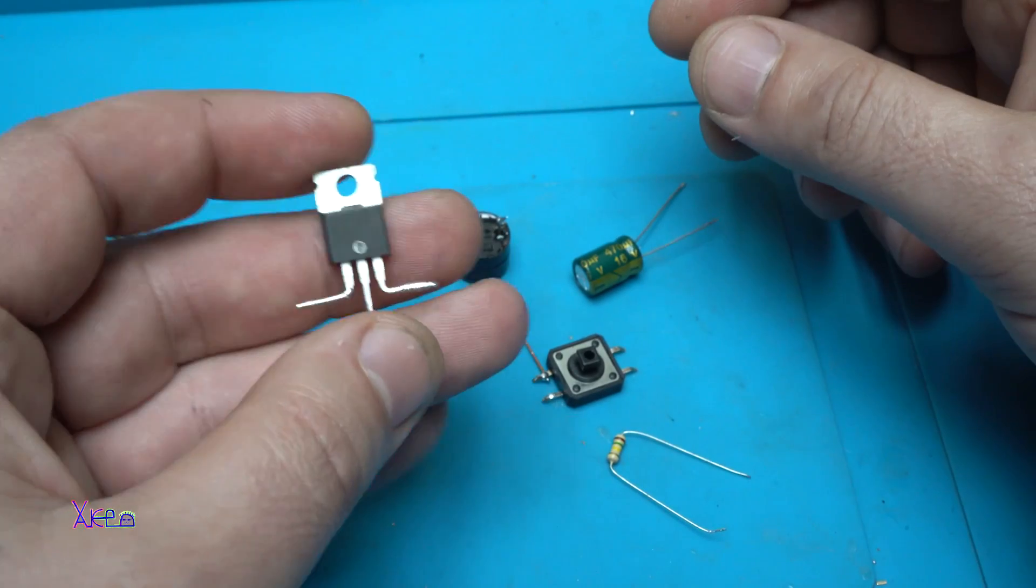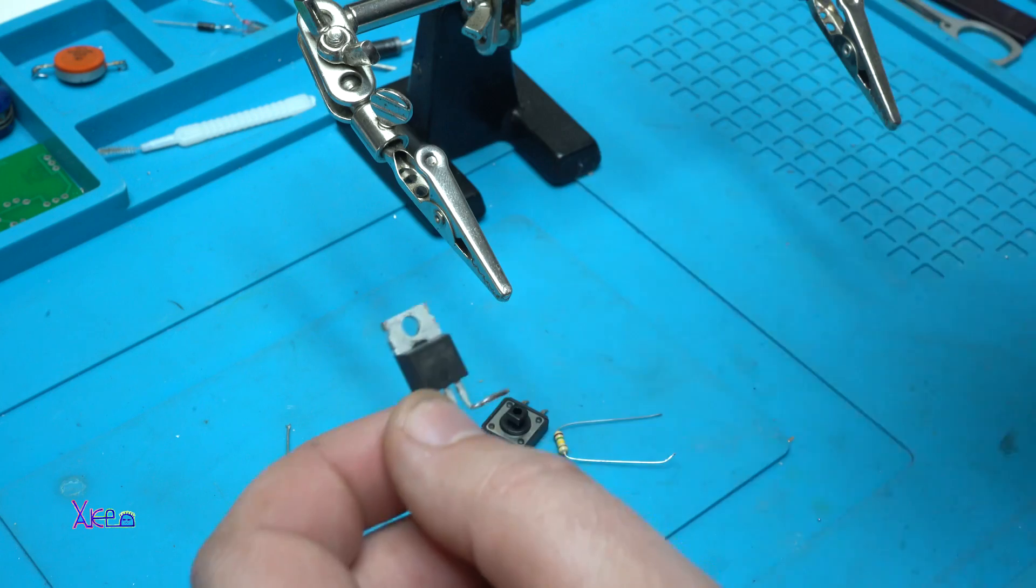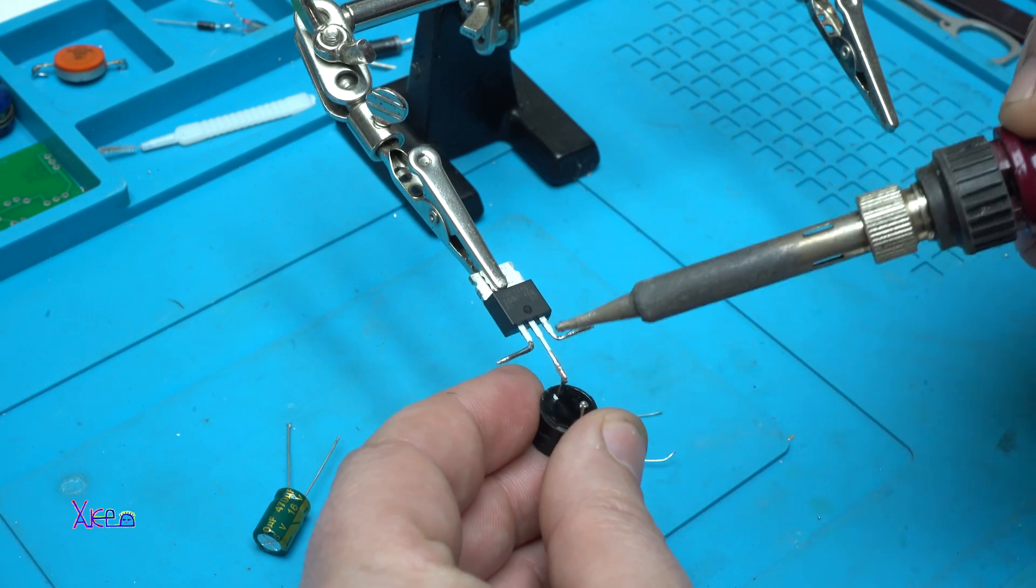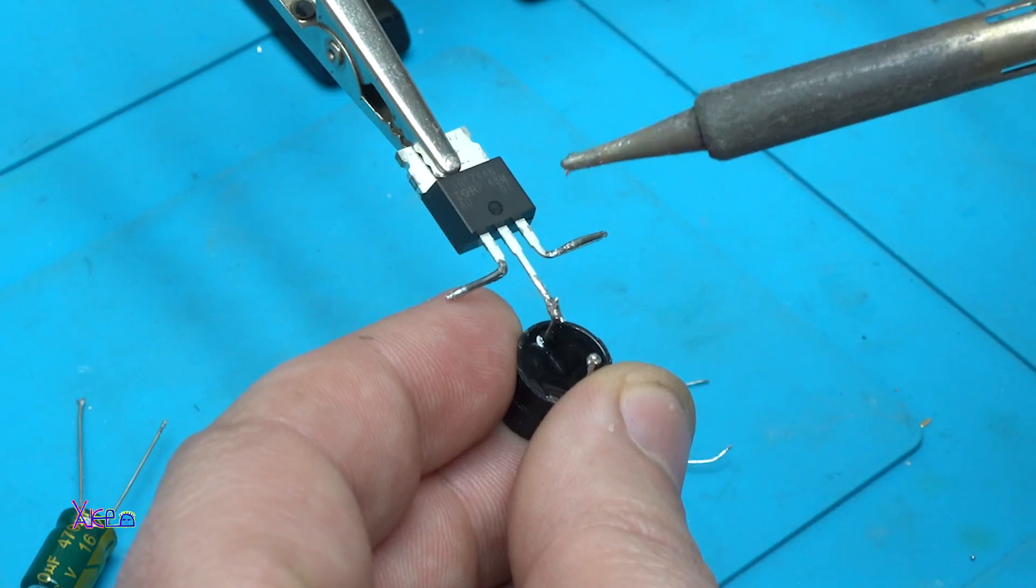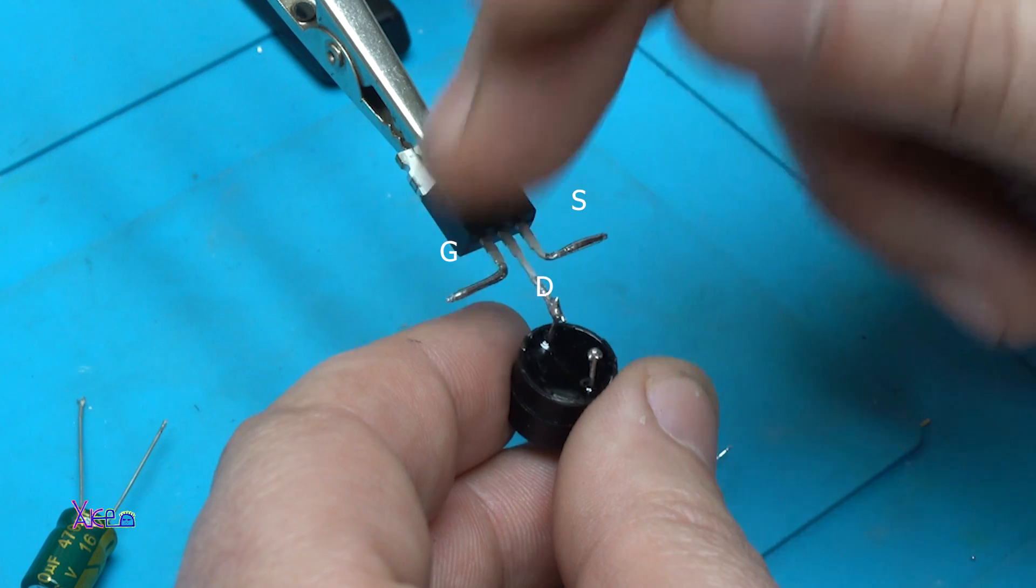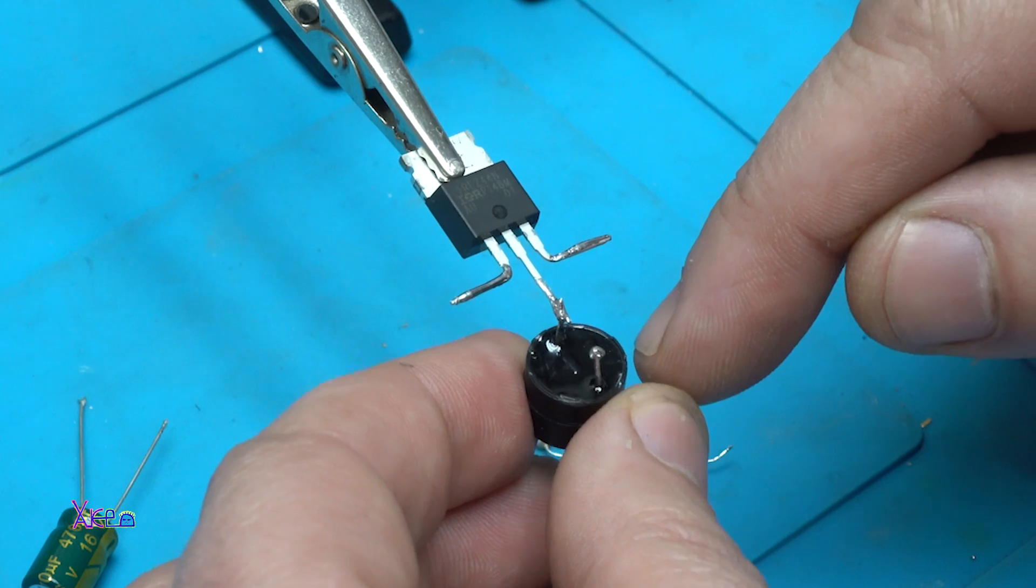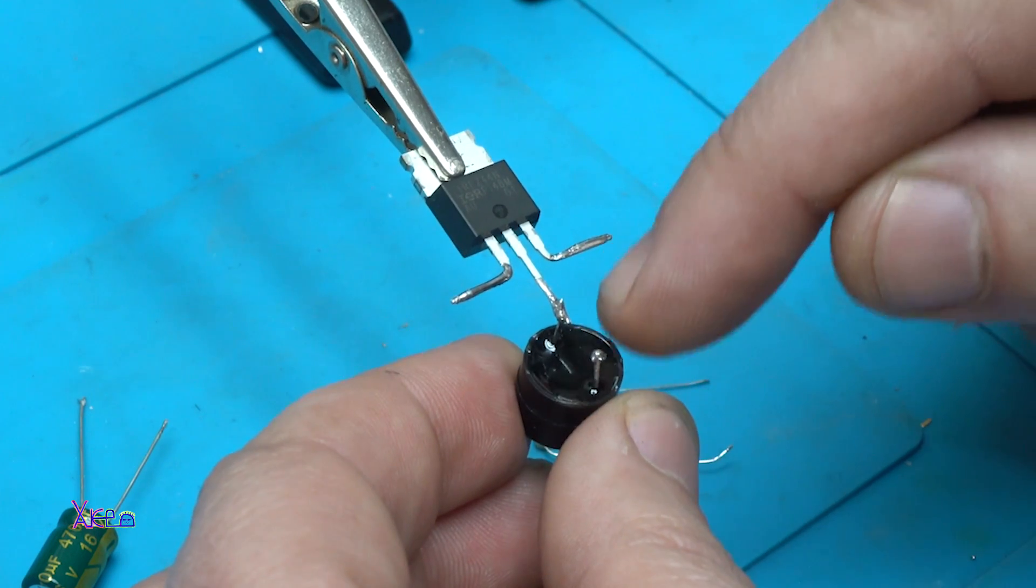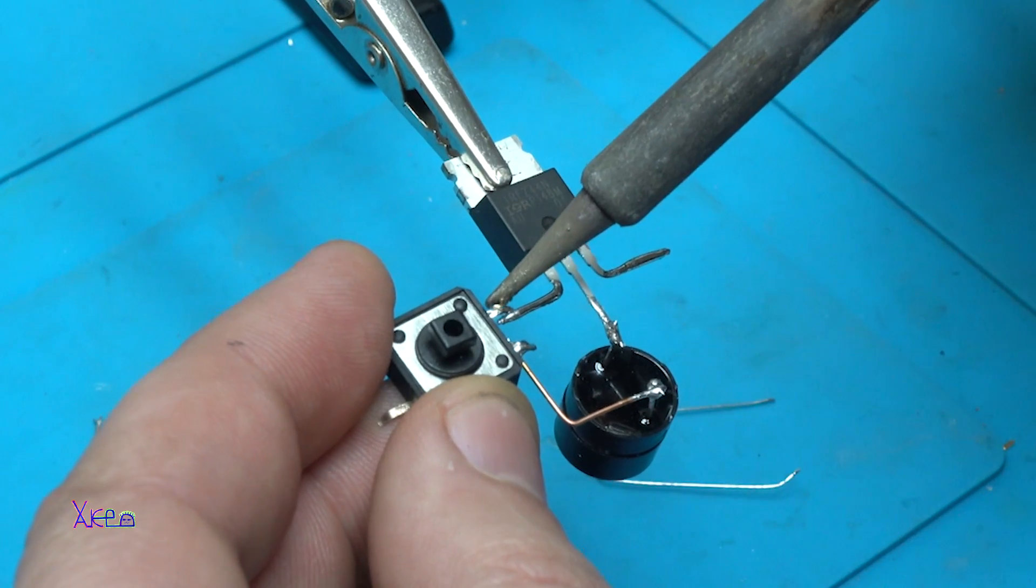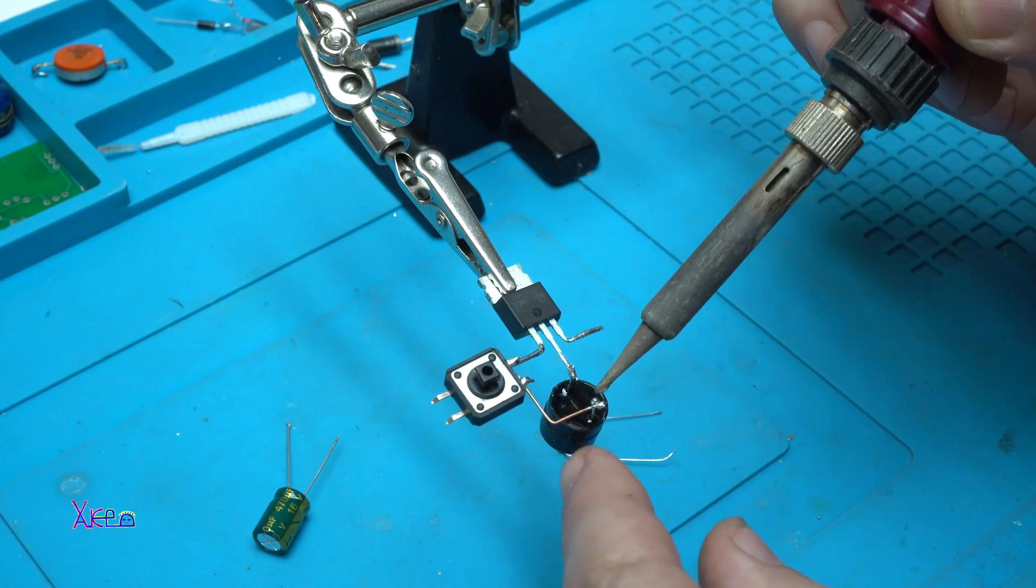Three pinouts: gate, drain, and source. On drain I solder the buzzer with negative side. On the buzzer, adding a tact switch between gate and positive side of the buzzer.